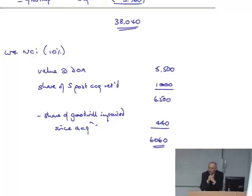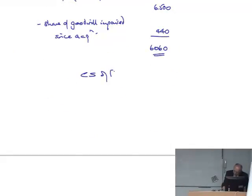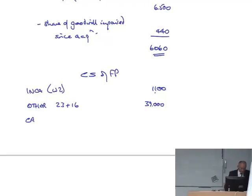Consolidated statement of financial position. Income working to 1,100. Well then assets 23 and 16. Current assets 36 and 64. What about the dividend receivable.